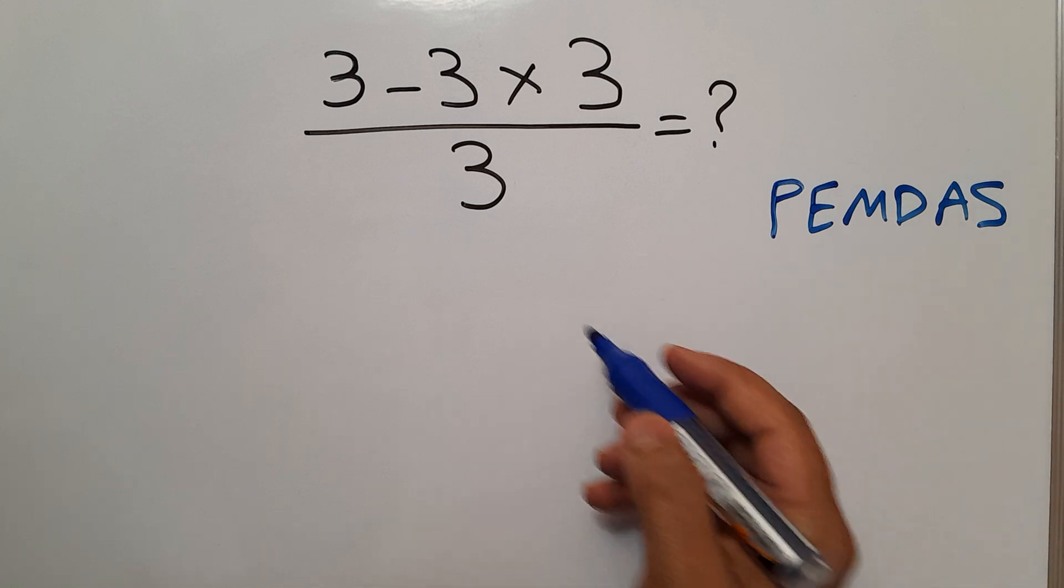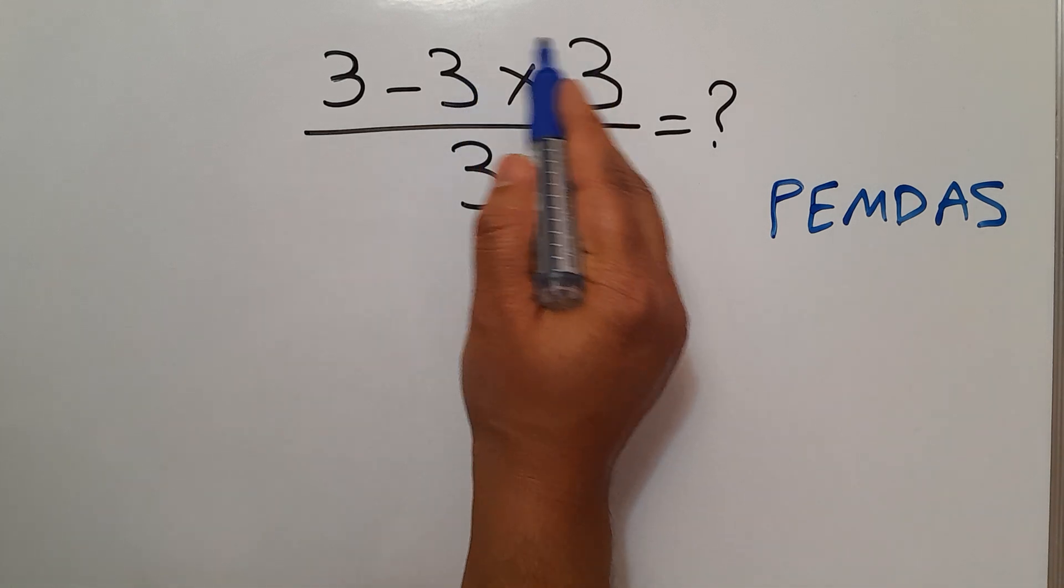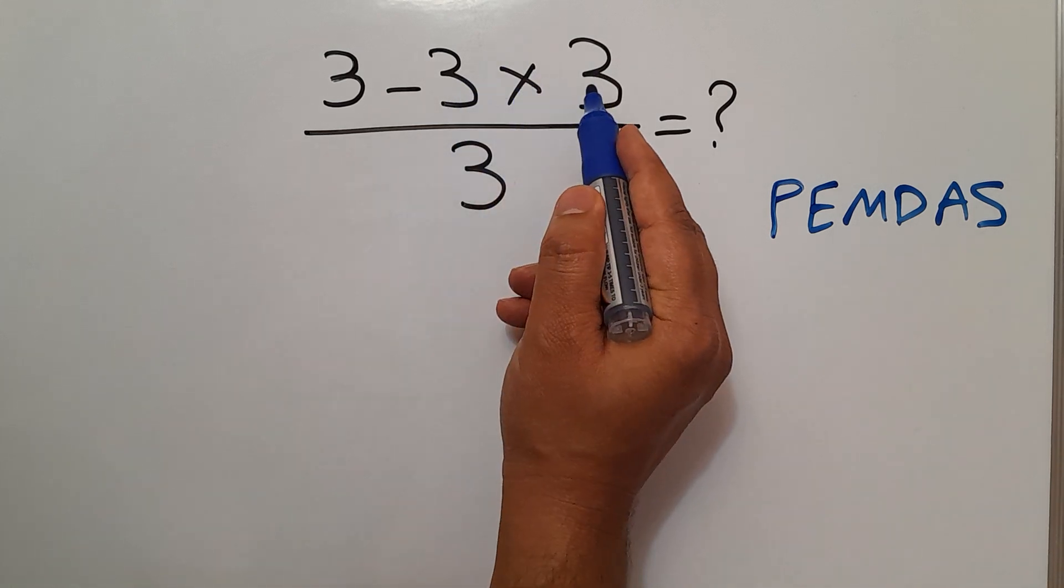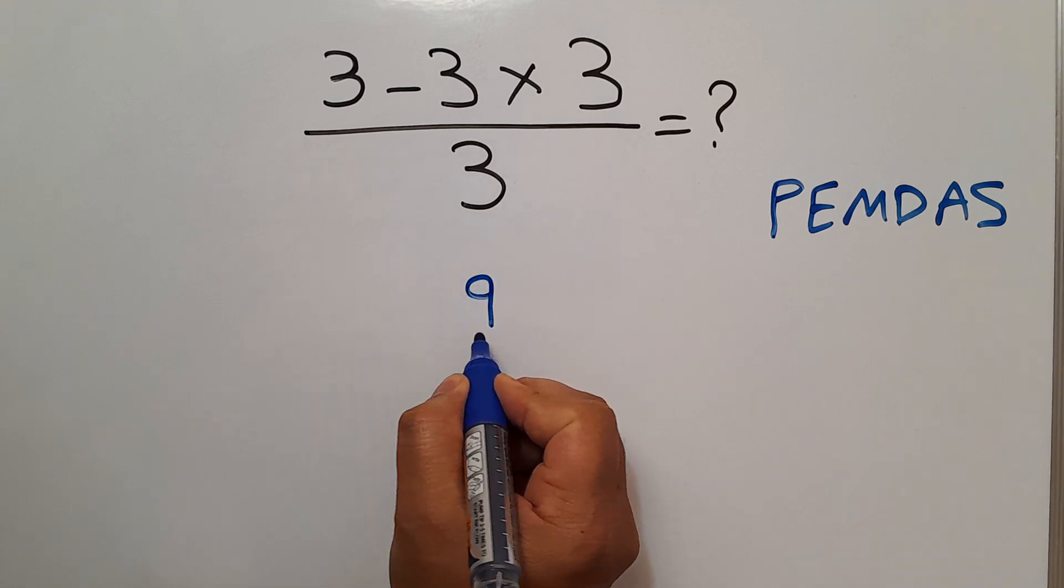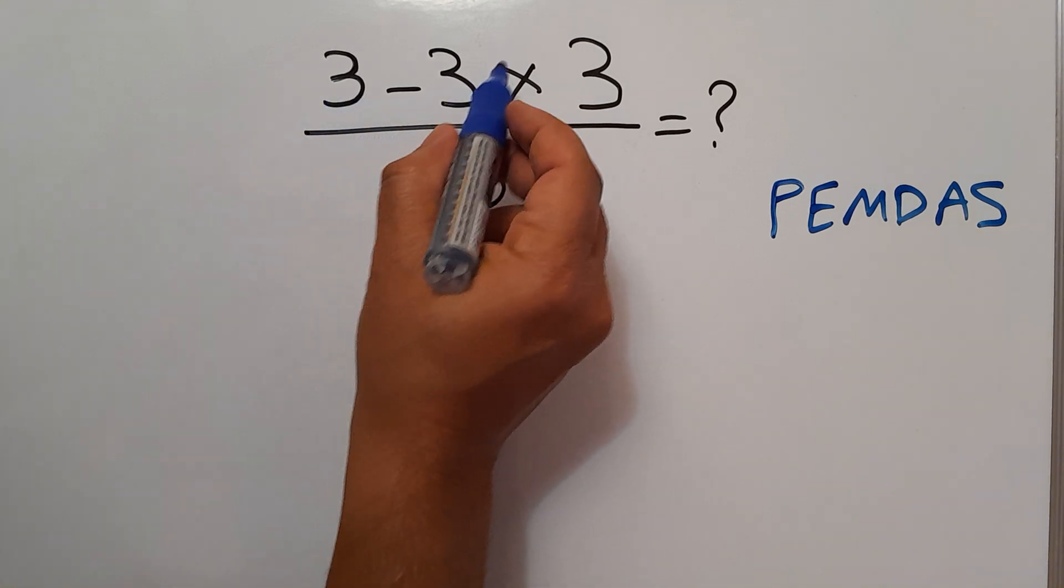So here, we have to first do this multiplication. 3 times 3, which equals 9, so 9, and we have 3 minus this.